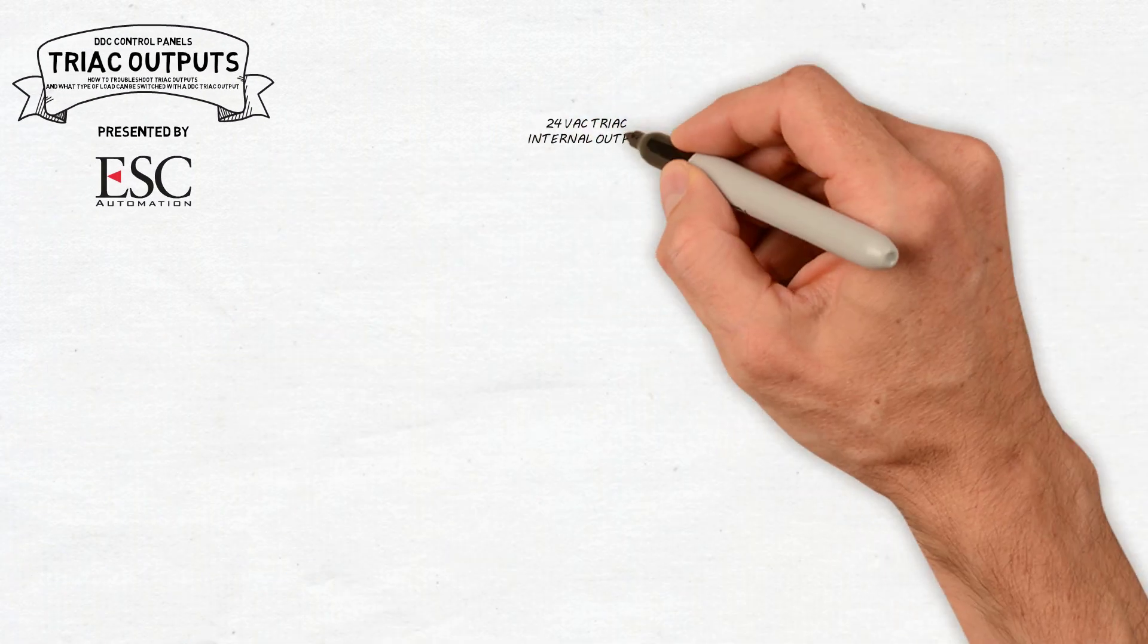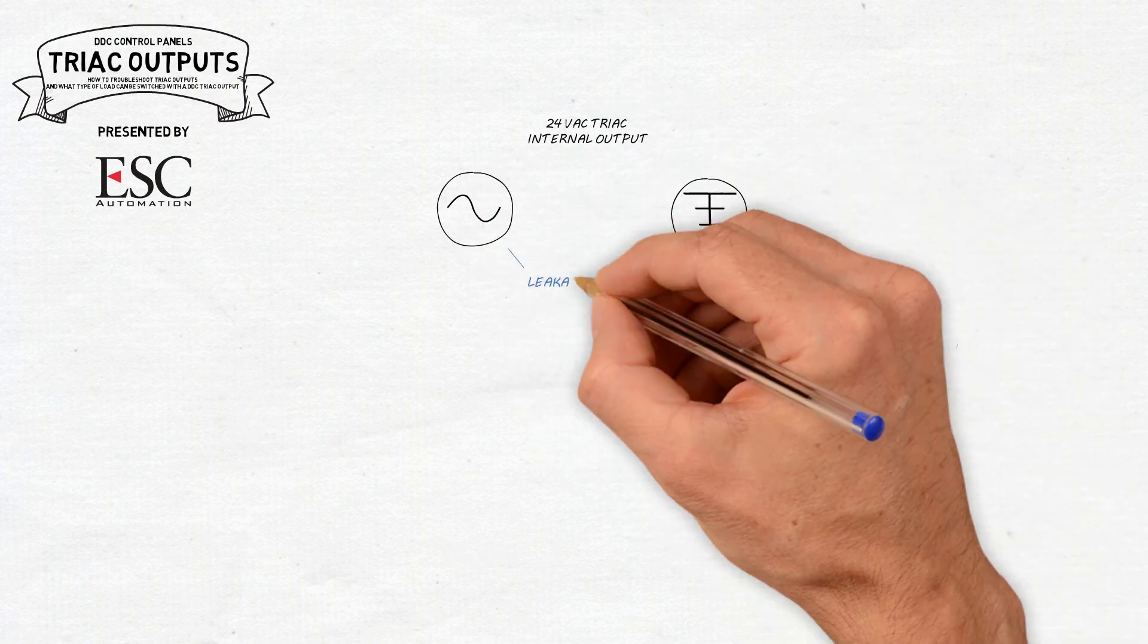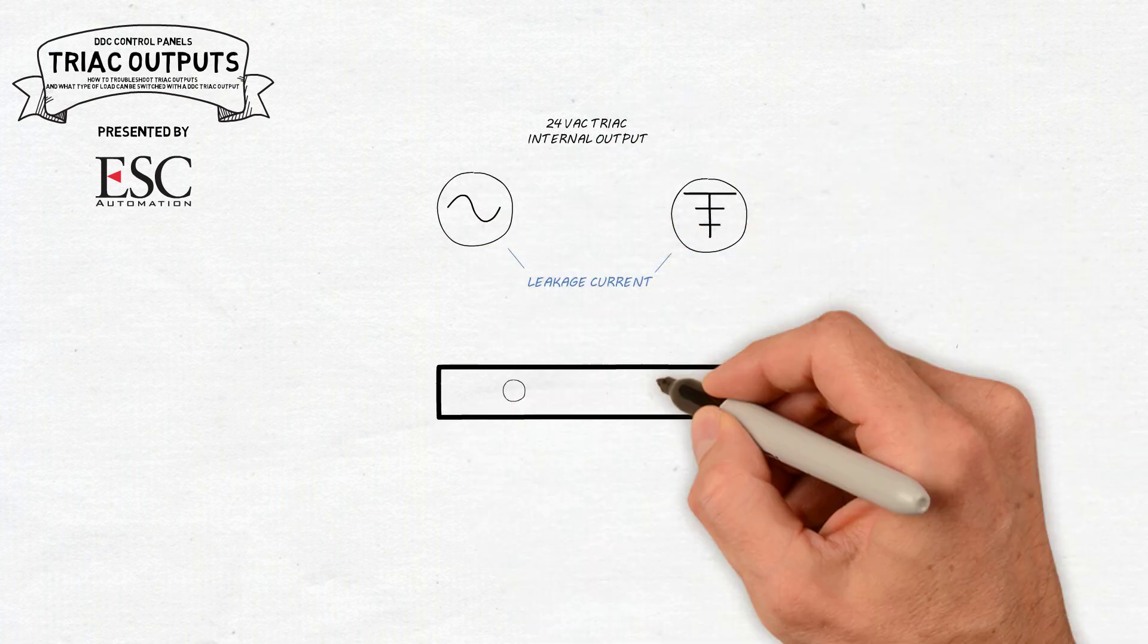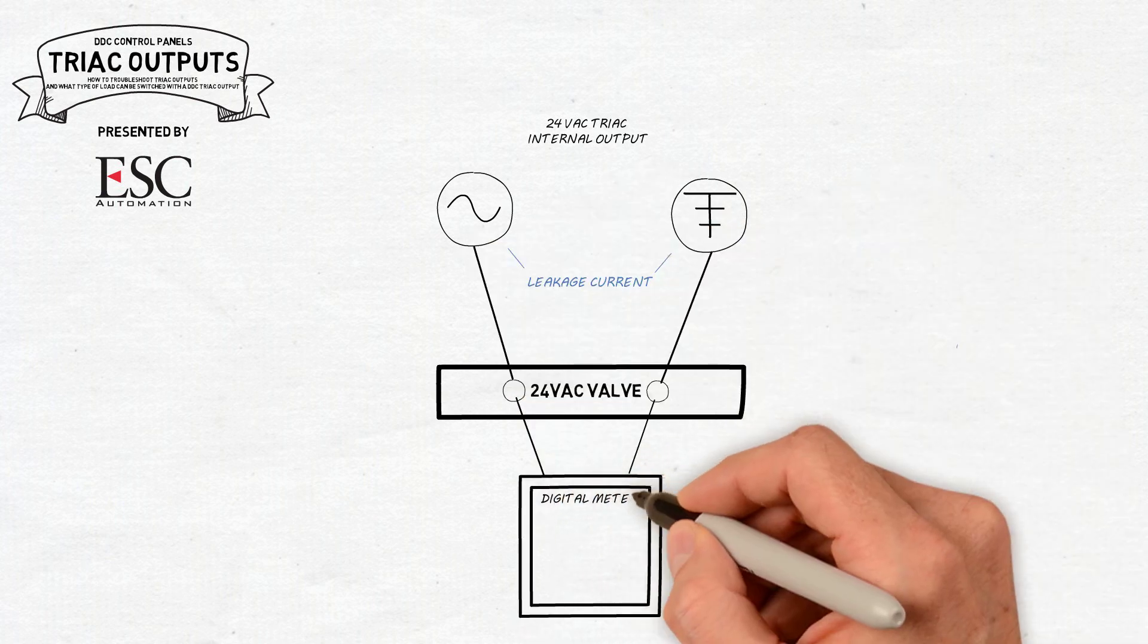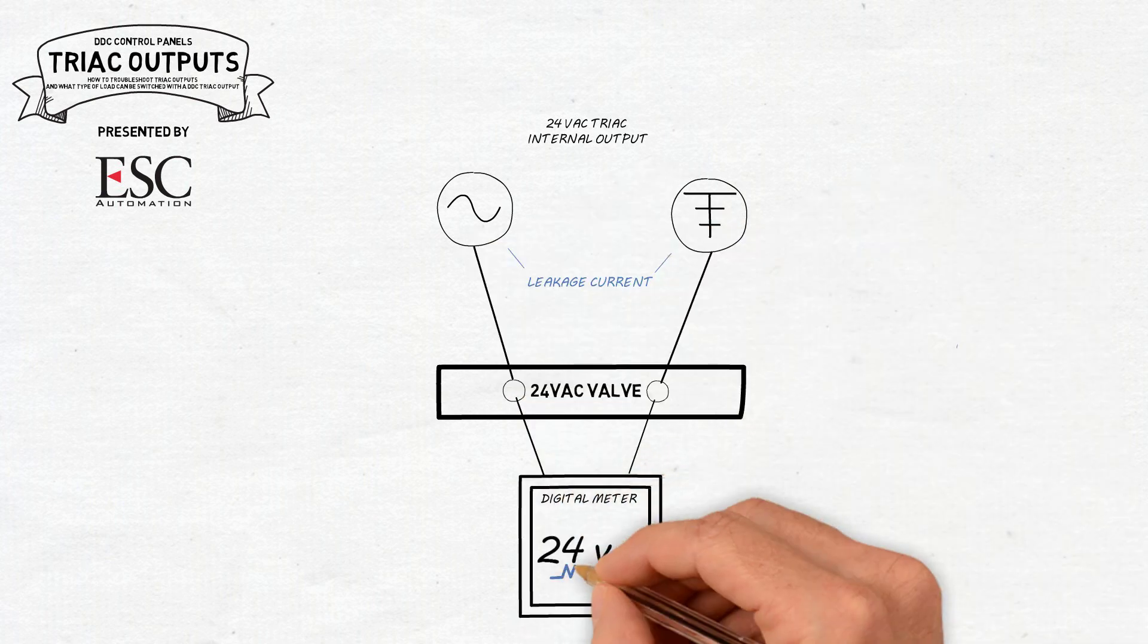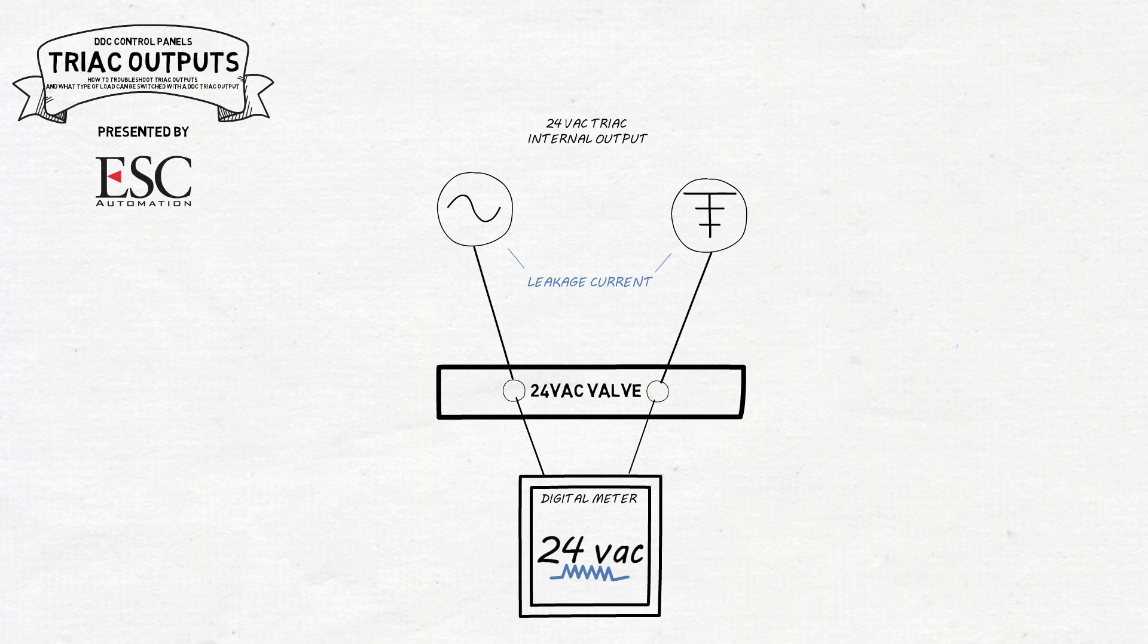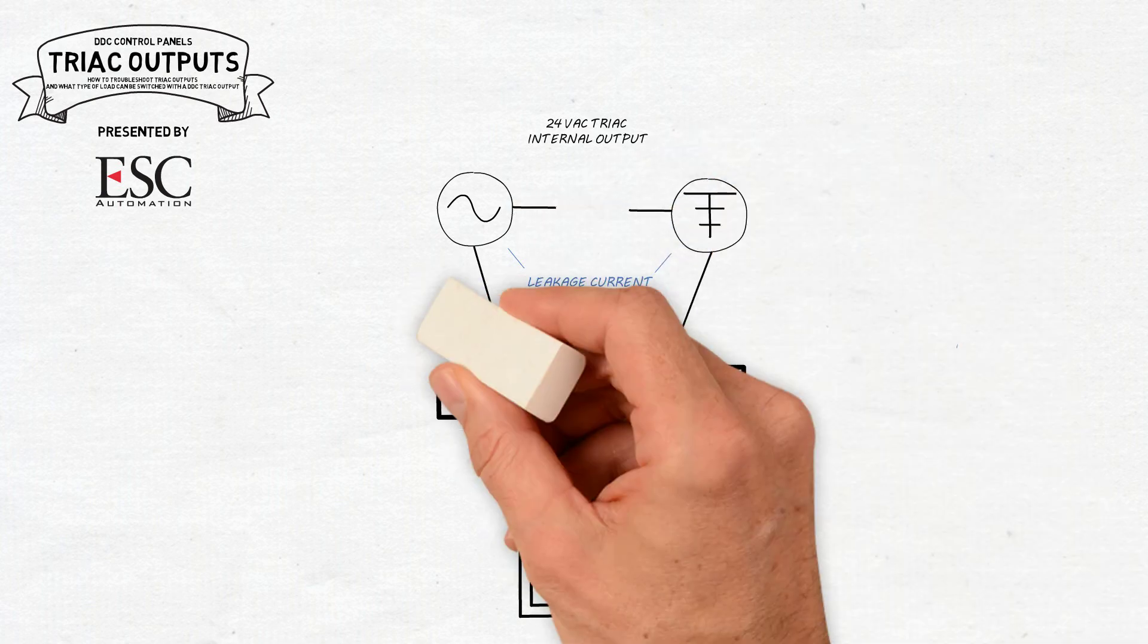One of the problems techs have with triacs is understanding how to use a meter on them. Triacs have a leakage current that doesn't go to zero when the output is off with no load. Using a digital meter is part of the problem as the voltage on a digital meter has very high resistance. The best way to test a triac is with the load connected to the output.